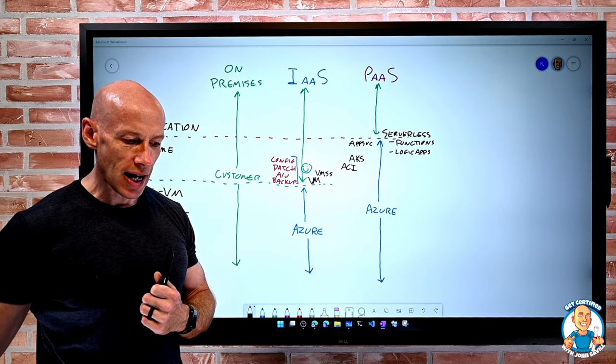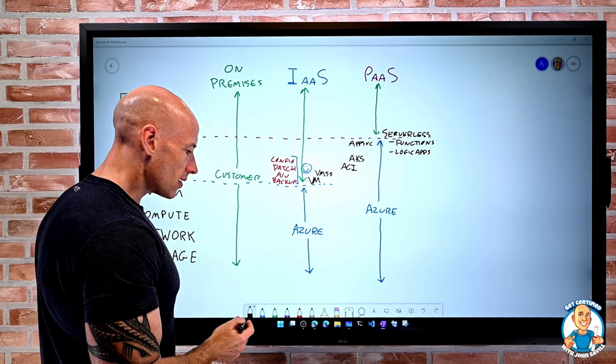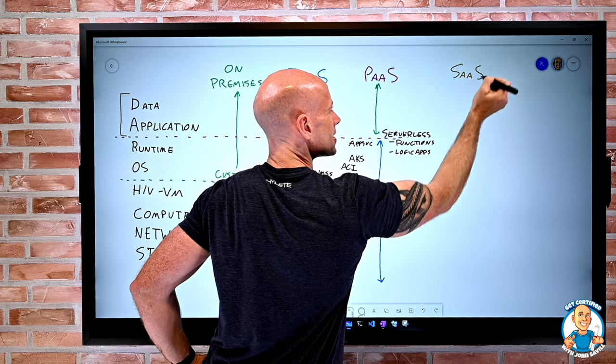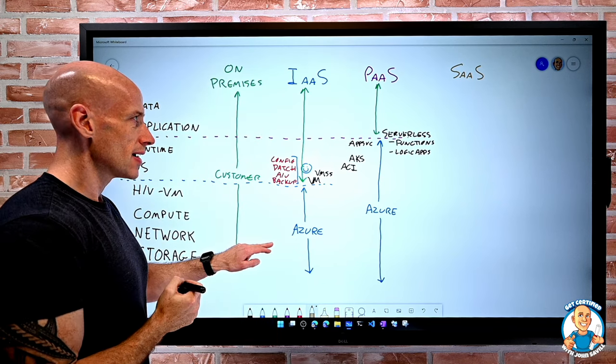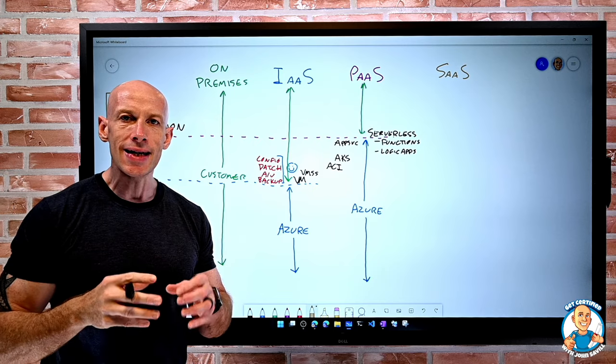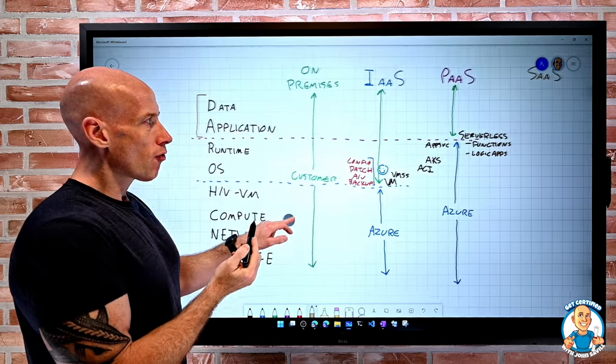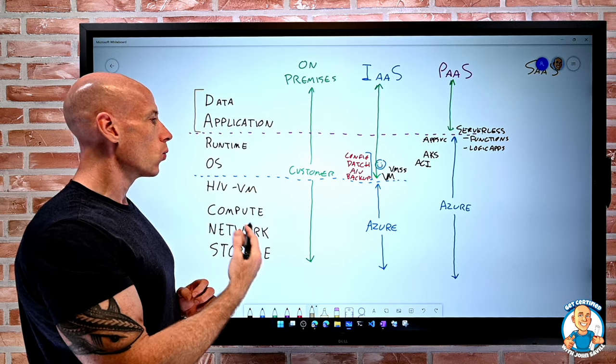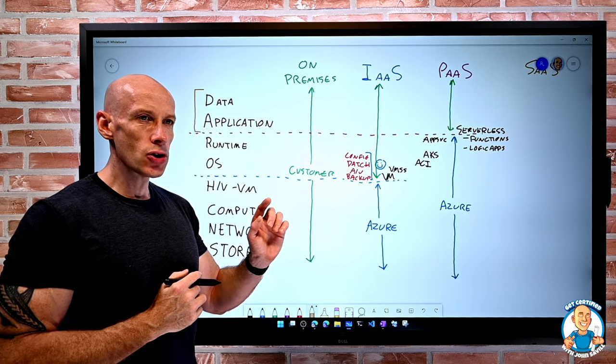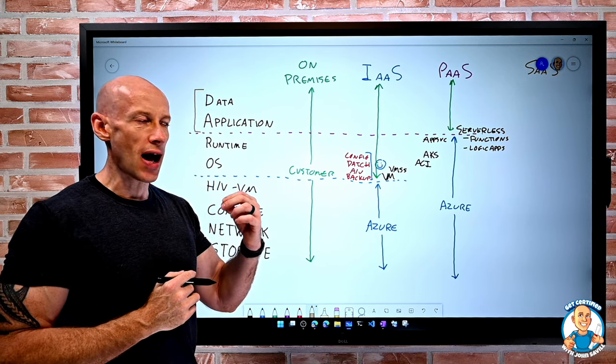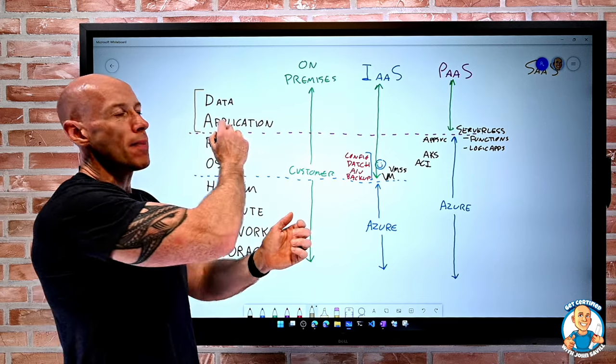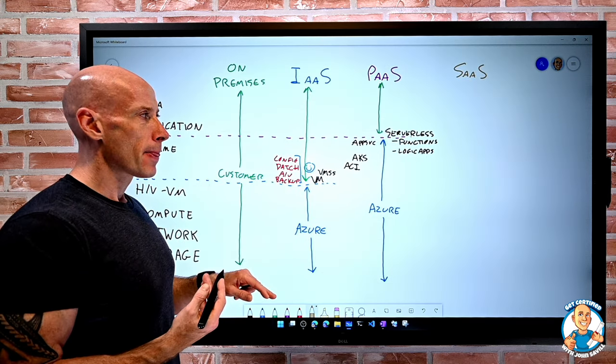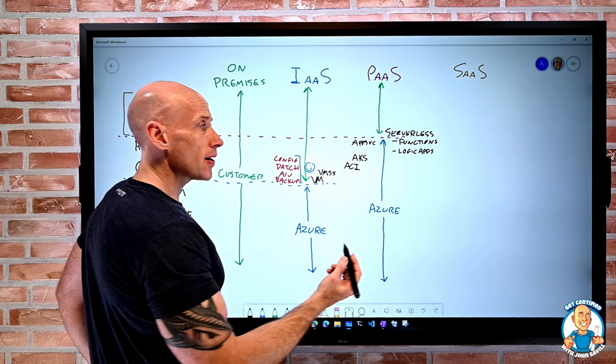And then at the far end of kind of this scale is SaaS, software as a service. Now, this is where the entire business function is delivered. With all of these other offerings, it's delivering maybe a VM, it's delivering a runtime and a unit I can work on. With a SaaS solution, it delivers the actual business value. Because for IaaS and PaaS, it's giving me something, but I have to still write my application to deliver the business value. With SaaS, it's delivering that.